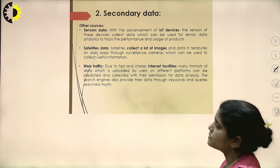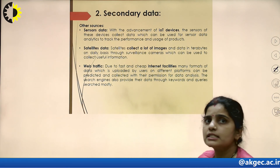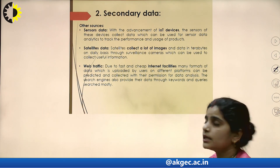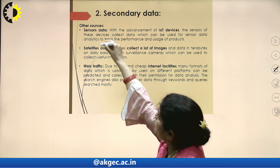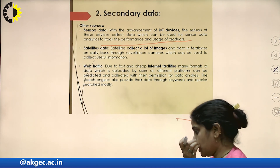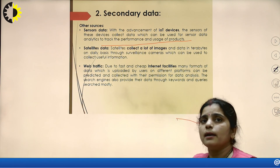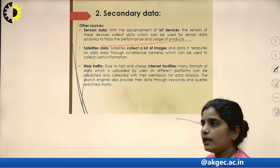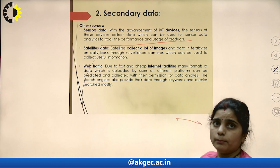Other sources through which we can collect data include, first, sensor data. With the advancement of IoT devices, sensors are most prevalent in the current trend. The sensors of devices collect data which can be used for sensor data analytics and is used to track the performance and usage of products. Most things in the current trend are controlled by sensors in IoT devices, and the data collected can be analyzed to track the performance of a particular product.